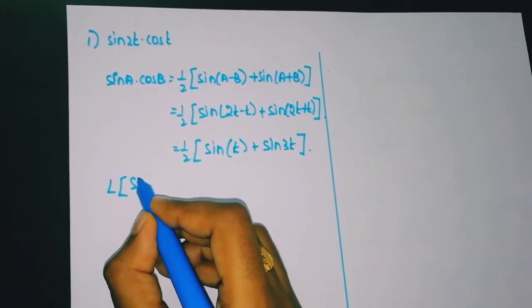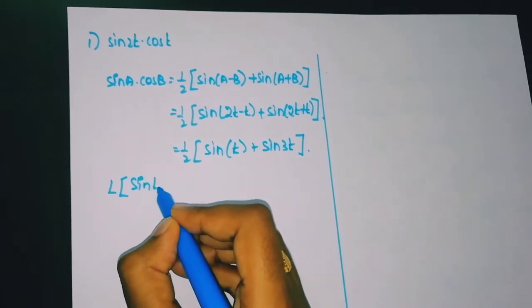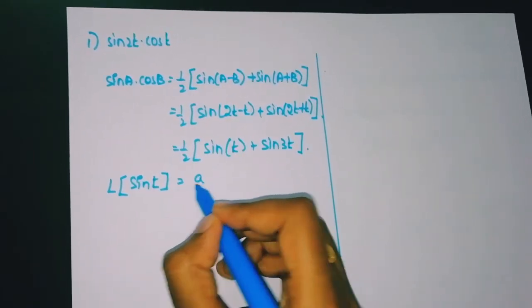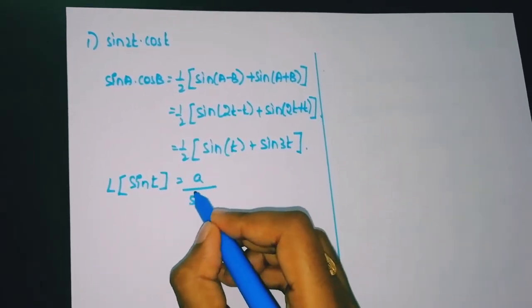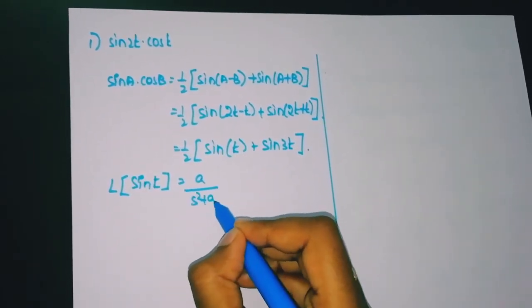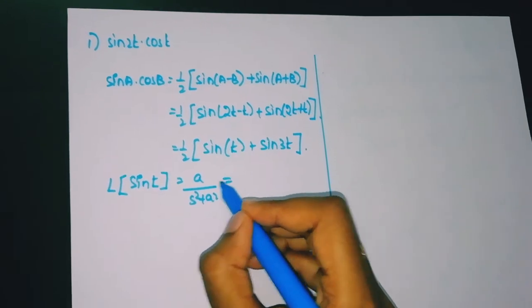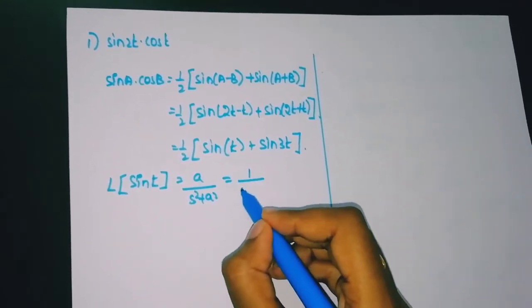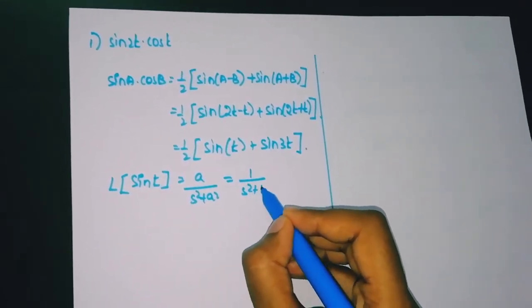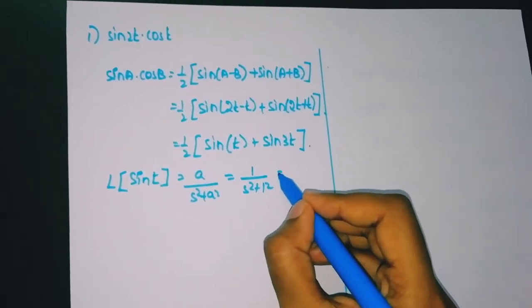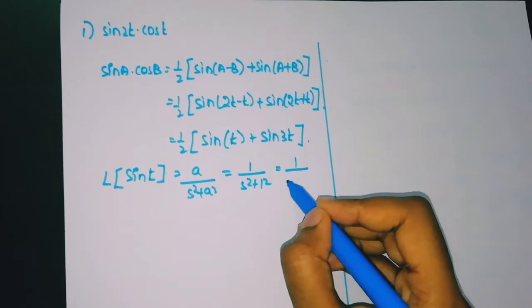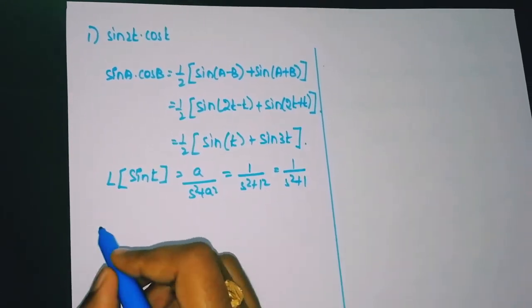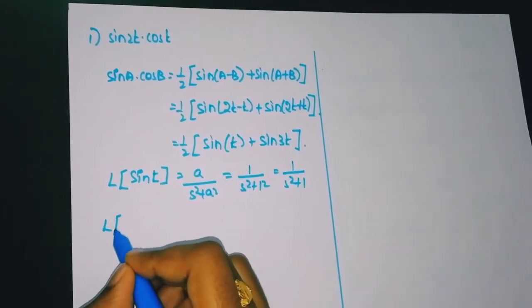Now we apply Laplace to each term. Laplace of sin(t): the formula is a/(s² + a²), and here a = 1, so it is 1/(s² + 1).